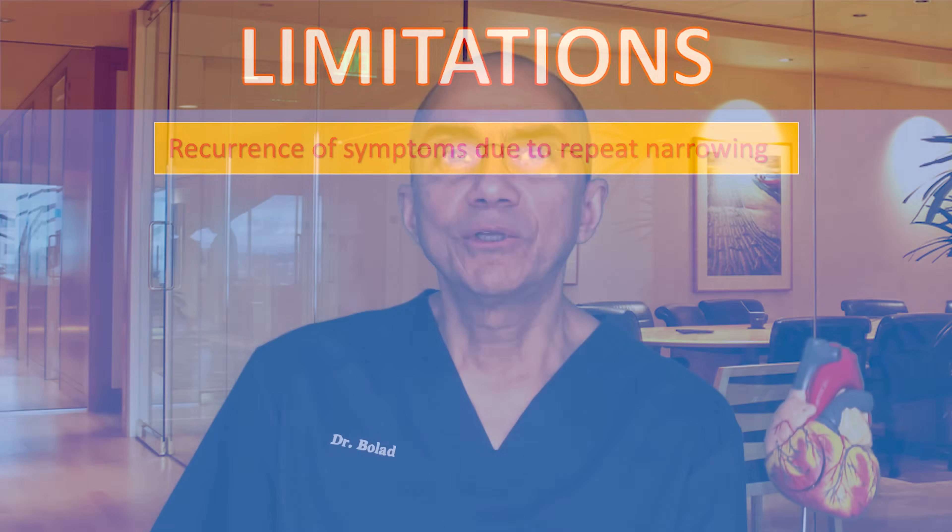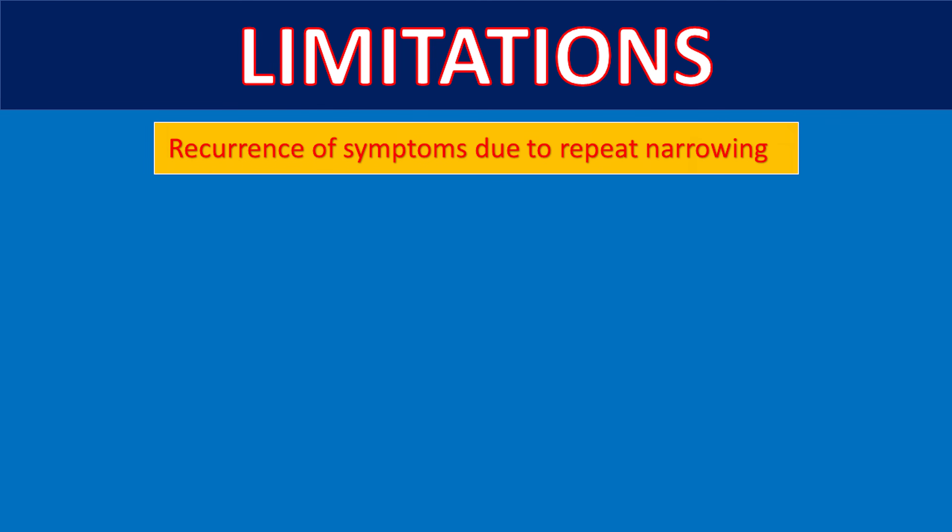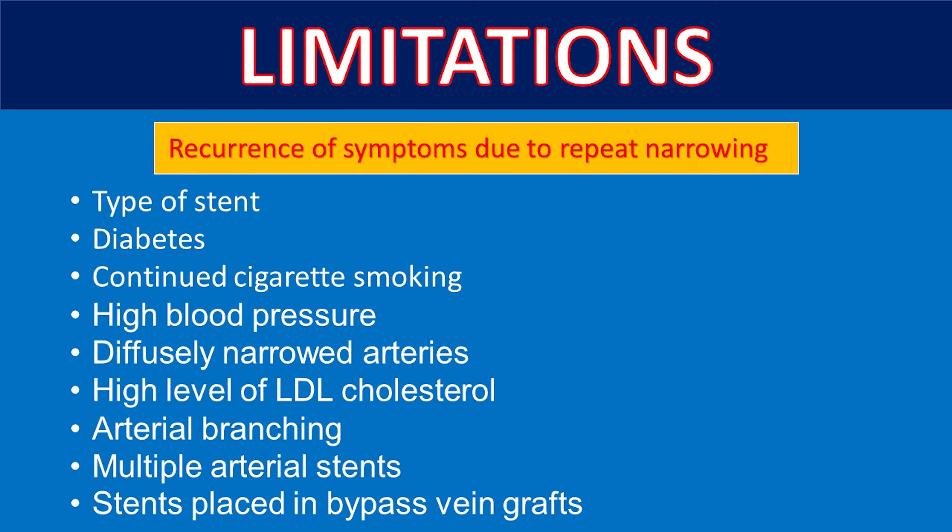Some coronary artery sites are more prone to recurrent narrowing than others. Conditions that increase the risk of narrowing — potentially requiring repeat catheterization, reopening, or bypass surgery — include diabetes, continued cigarette smoking, high blood pressure, diffusely narrowed arteries, high levels of bad LDL cholesterol, narrowing at or near the beginning of a side branch, a blood vessel with multiple stents placed, or stents placed in a vein graft from prior bypass surgery. Recurrent symptoms can also develop from other vessels that become narrowed, or from vessels that are very small, tortuous, have long-standing total blockages, or have calcified hardened lesions that are more difficult to open.